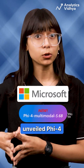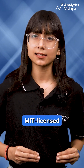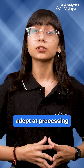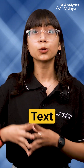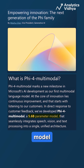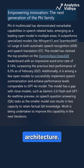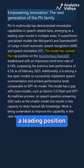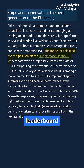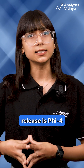Microsoft has unveiled Phi-5.4 Multimodal, an open-source, MIT-licensed AI model adept at processing text, vision, and audio inputs. This 5.6 billion parameter model integrates modalities without requiring fine-tuning of the base architecture. Notably, it has achieved a leading position on the OpenASR leaderboard with a word error rate of 6.14%.